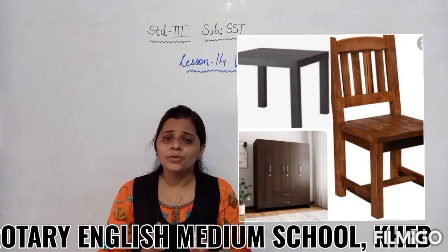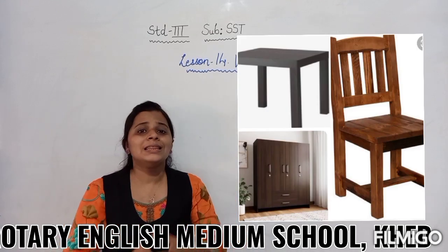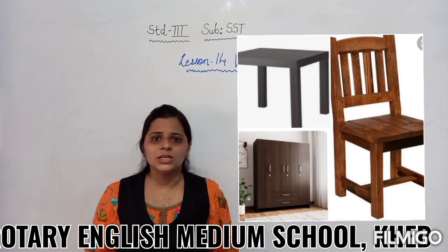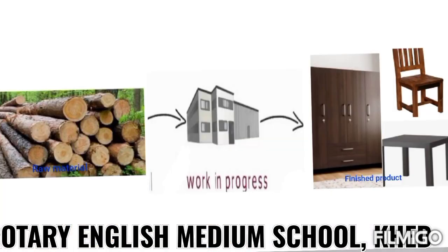Now students, this table, chair, wardrobe — this is a finished product. Now just take the example of this wood. This wood is cut down from the forest or from agriculture. After that, this wood is sent to the factories for the making process.